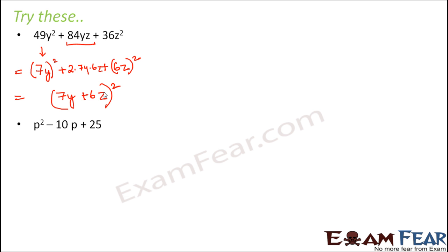Let's look at one more example. Here also you have 3 terms, but this time the middle term has a negative sign. So there is a possibility that it might fit into the standard identity of (a-b)². Because p² is a perfect square, 25 is also a perfect square because it is the square of 5, and 10p can be written as 2×p×5, that is 2ab. So this can be written as (a-b)² or (p-5)².